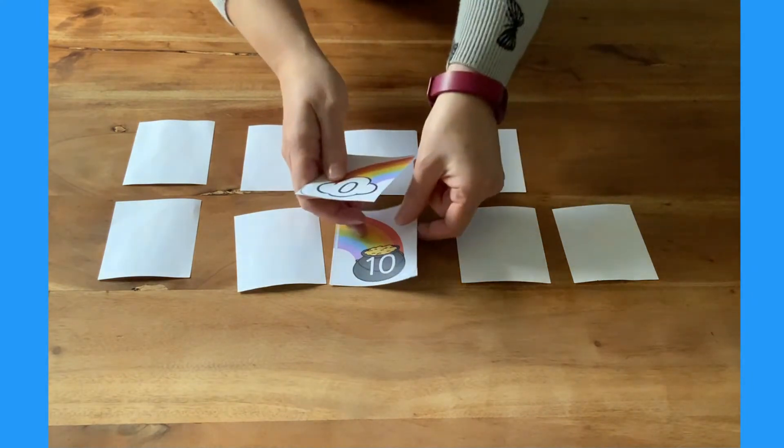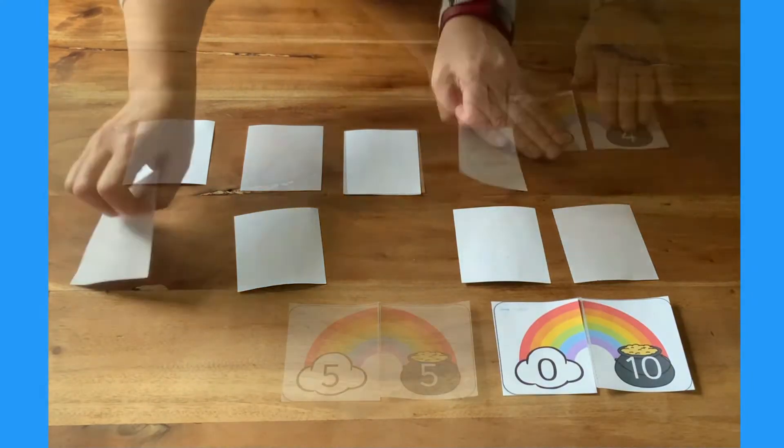If you get a pair, make the rainbow. Can children find all the number bonds to 10 pairs?